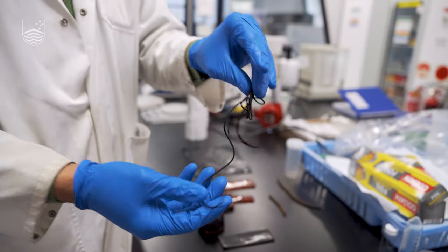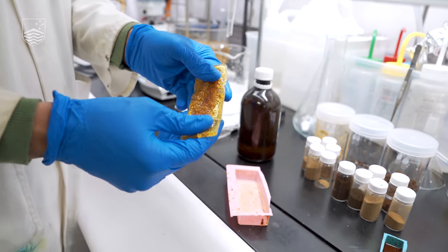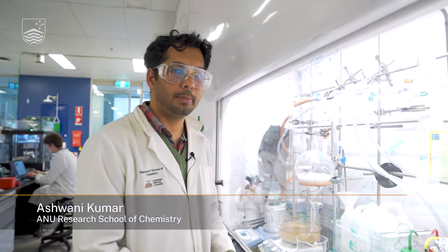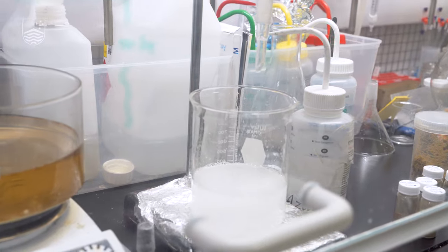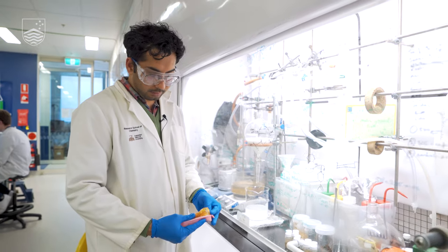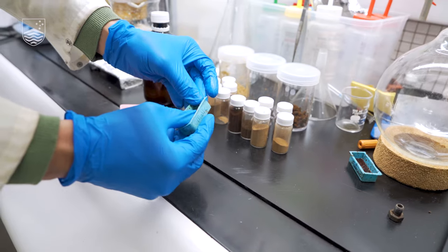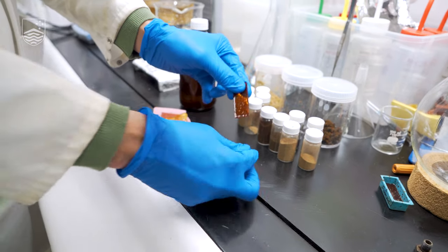We start with vegetable oil. We epoxidize the vegetable oil and then add our secret ingredients. This is our material without any coffee. Once we add coffee, our material becomes very hard and rigid like a normal plastic.